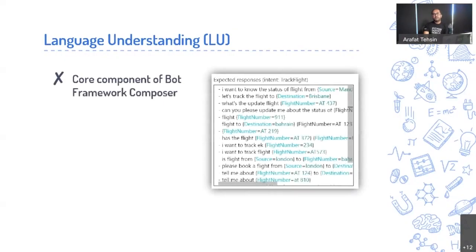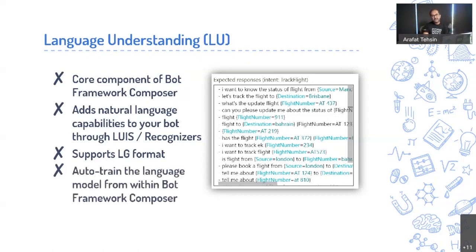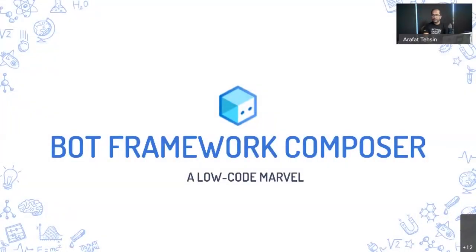Language Understanding (LU) is different from Language Generation. LU is the core of Bot Framework Composer and allows you to build LUIS models right within Composer, so you don't have to go to the LUIS portal. It adds natural language capabilities, supports the LG format for defining LUIS models, and auto-trains the language model within Composer — meaning if you change your LUIS model, you don't need to manually retrain and republish it.